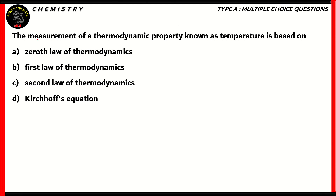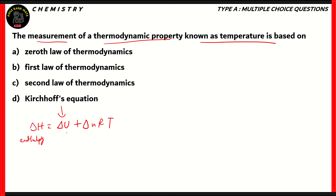Next question. The measurement of a thermodynamic property known as temperature is based on: 0th law of thermodynamics, 1st law of thermodynamics, 2nd law of thermodynamics, or Kirchhoff's equation? Let's look at each option. Kirchhoff's equation goes like this: delta H equals delta U plus delta n R T. Basically, enthalpy is related to internal energy. Change in enthalpy is related to change in internal energy, change in number of moles, ideal gas constant, and temperature. Now, temperature is used in Kirchhoff's equation, but the measurement of temperature is not based on it, so therefore option d is incorrect.